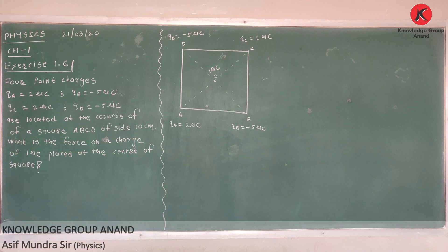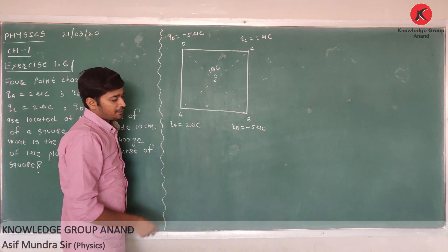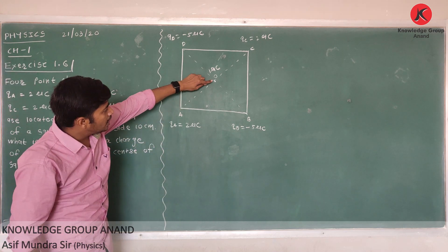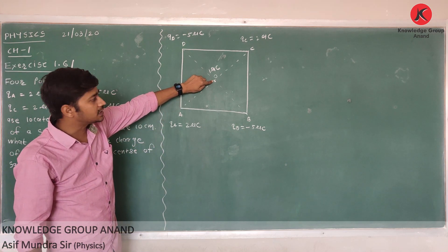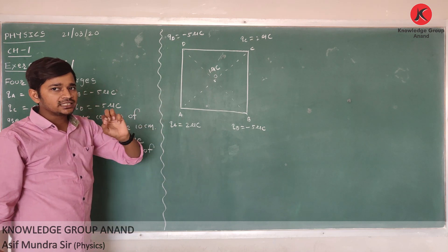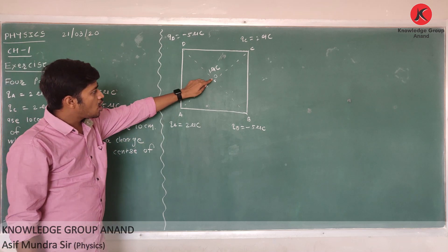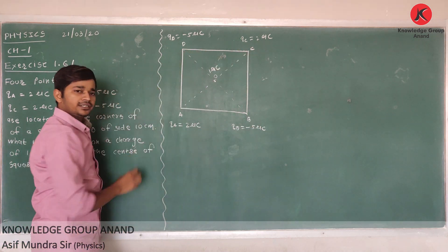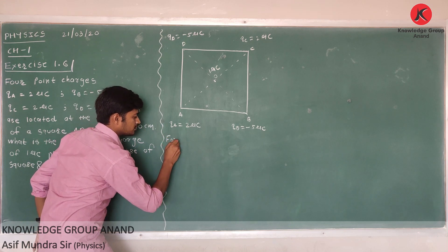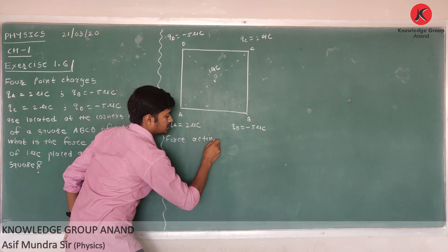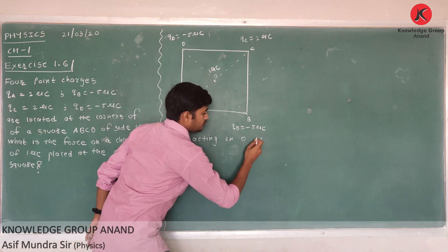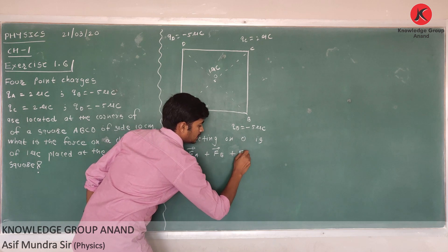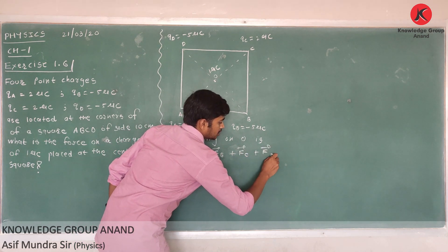You are given this data. Let's draw it. It is a square A, B, C, D. Four charges are placed: QA, QB, QC, and QD. You have to find the force acting on center O, where a 1 microcoulomb charge is placed. According to the superposition principle, the force acting on O is F = FA + FB + FC + FD.